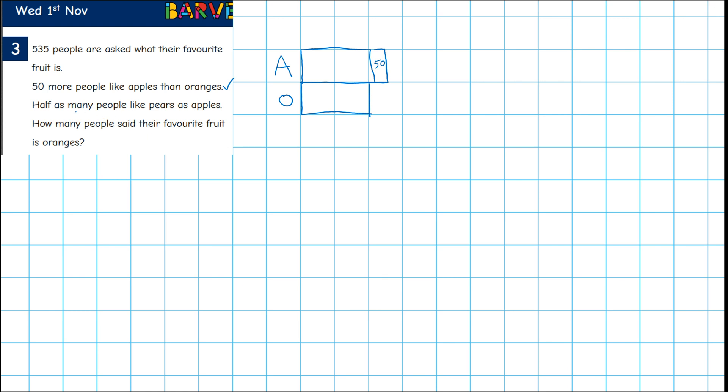Let's have a look at the next bit. Half as many people like pears as apples. Okay, so here's another bar. And half as many people like pears as apples. So if we look at apples, what have we got? We've got this part here, and we've got this bit that's 50.